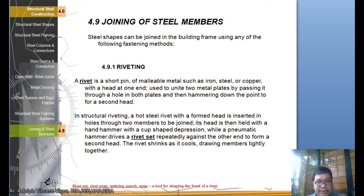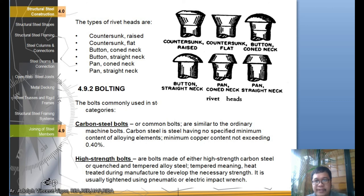These are the types of rivets: you have the countersunk raised, the countersunk flat, the button cone neck, the button straight neck, the pan cone neck, and the pan straight neck. Familiarize yourselves with the different rivets.